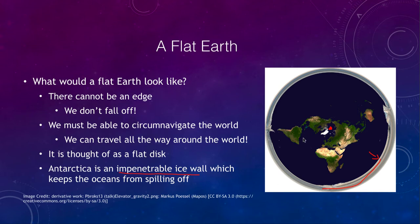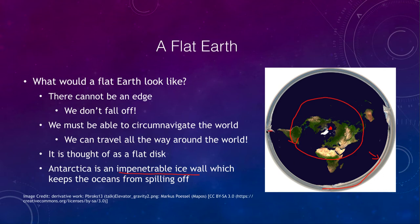This means we can circumnavigate the world — travel around it and never reach an edge, go from one point to another and come back to our starting point. However, it does require this impenetrable ice wall, meaning there is no way to travel across Antarctica. If you leave on one portion, you will not come back around the other side; it simply becomes more and more impenetrable as you go deeper.